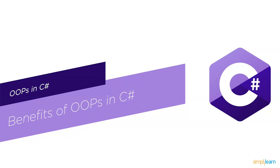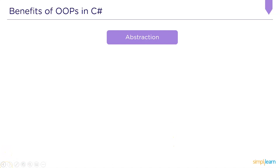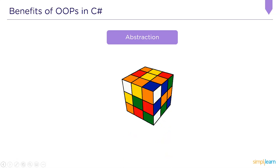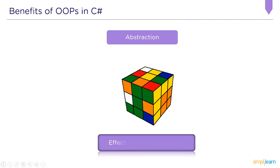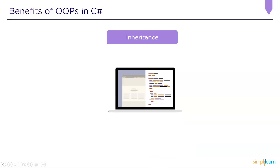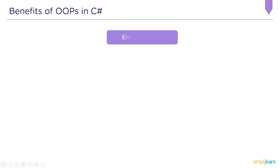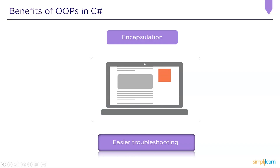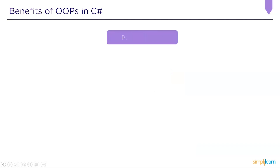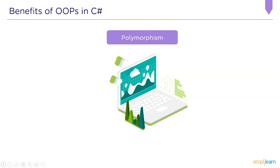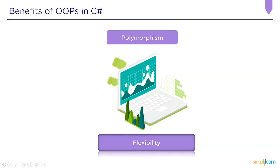We've now come to the last part — the benefits of object-oriented programming in C#. Using abstraction improves problem-solving effectively. Using inheritance gives the major advantage of code reuse. Using encapsulation makes troubleshooting easier. And using polymorphism adds flexibility to your code. There are also many more benefits to using object-oriented programming in C#.